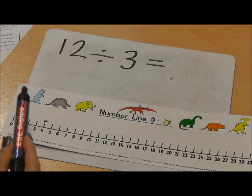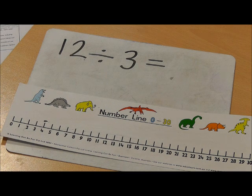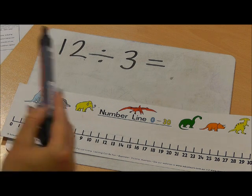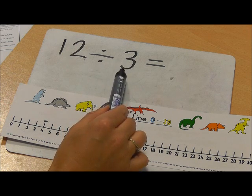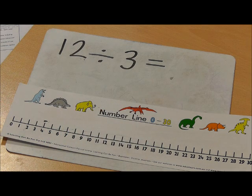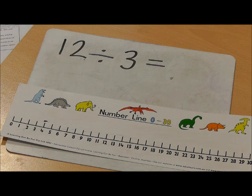I'm now going to demonstrate how to solve this division calculation using a number line. My calculation says 12 divided by 3.